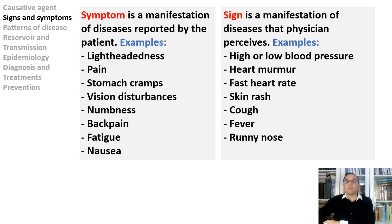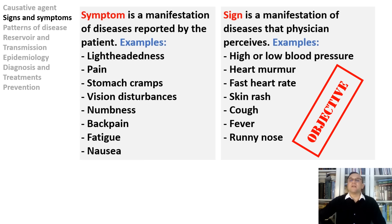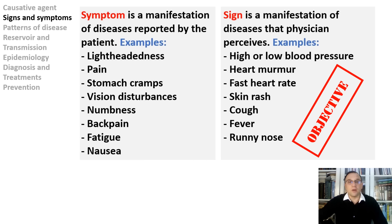High or low blood pressure and fevers can be measured and observed by another person — those are signs. Changes detected by MRI, ultrasound, or X-ray, heart murmurs, hyperglycemia, skin rash, and cough are all signs. A sign is objective evidence of disease — it is a health issue that can be observed and identified by anyone, but should be professionally diagnosed by doctors who have the training and experience to identify their possible cause.